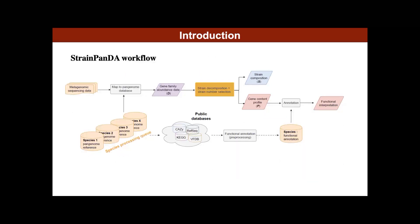Here is the full workflow of StringPanda. First, pan-genome references of selected species were pre-built and annotated with public databases. Second, sequencing reads were mapped to pan-genome databases to generate the gene family abundance data matrix D for each selected species. After decomposition, the gene content profile matrix P was annotated to give functional interpretation of the strings.